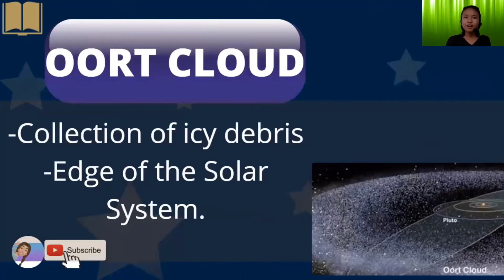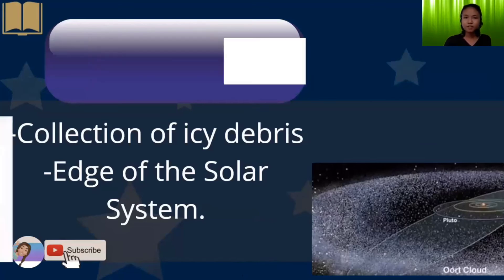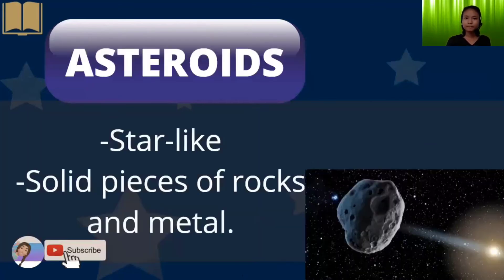Next, we have the Oort Cloud, or collection of icy debris. This is the edge of the solar system. Next, we have asteroids. These are star-like solid pieces of rocks and metals.